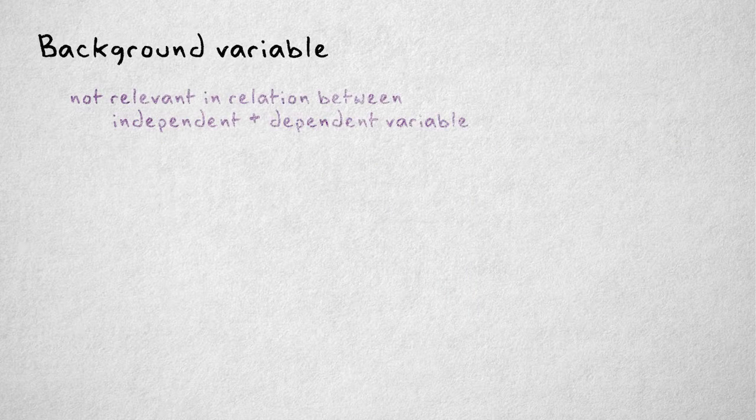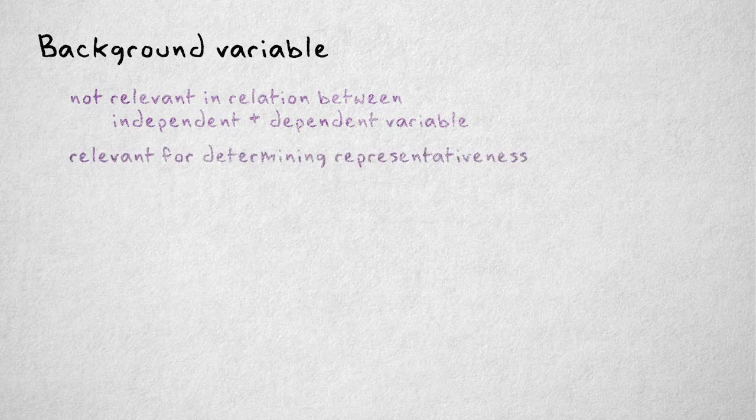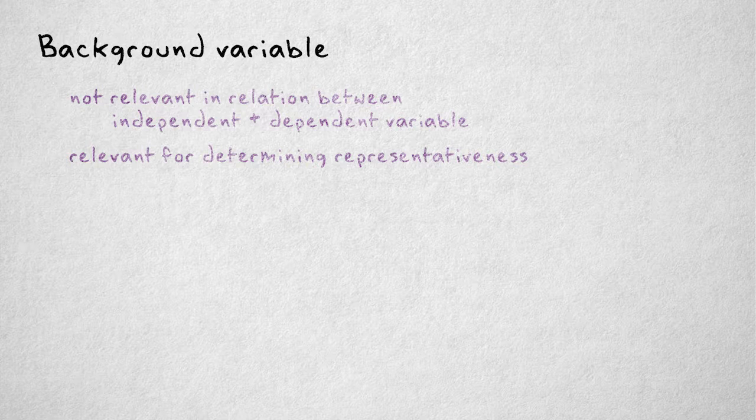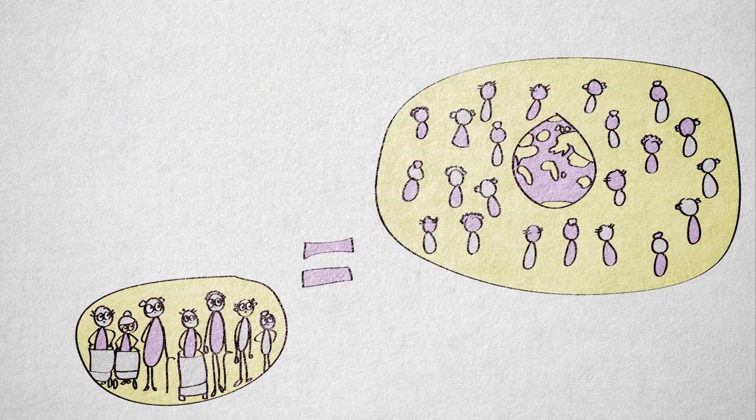The last type of variable of disinterest is a background variable. This type of variable is not immediately relevant to the relation between the variables of interest, but it is relevant to determine how representative the participants in our study are for a larger group, maybe all elderly people everywhere, even all people of any age.